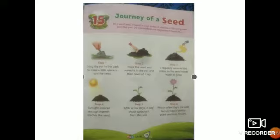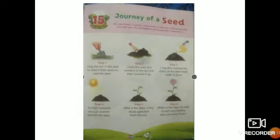Step 1: I dug the soil in the park to make a little space to sow the seed. Now David has dug the soil in the park to make a little space for the seed to sow. Now see step number 2: I took the seed and sowed it in the soil and then covered it up. Now this person is sowing a seed and covered it up with the soil.